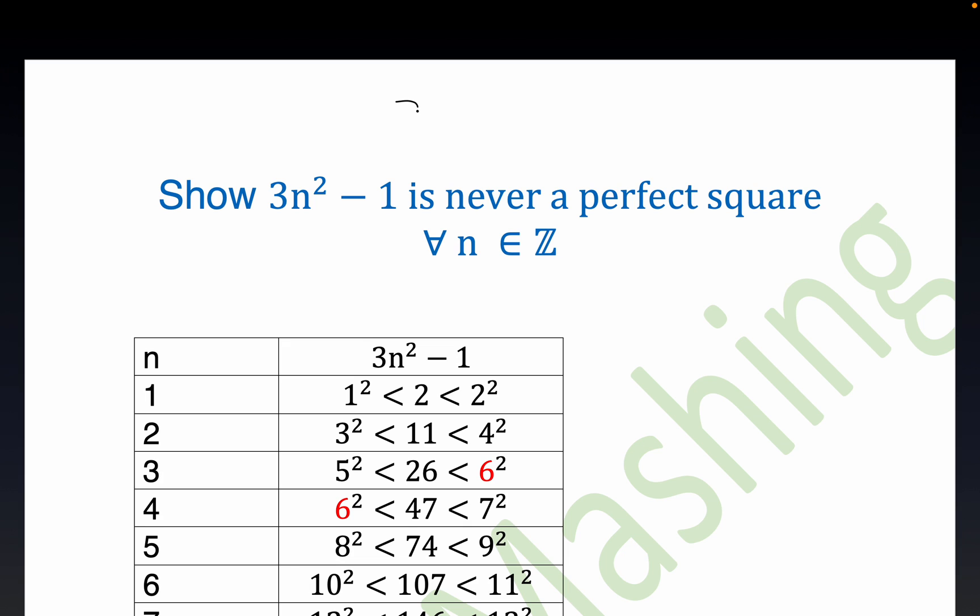Hey everybody, tonight I'm going to show you that this expression that depends on an integer is never equal to a square number. So more tersely, we could say we're trying to show that 3n squared minus 1 is never equal to a square integer. We can call it k squared if you want.